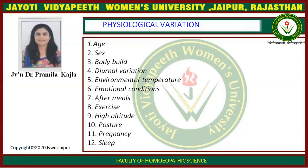Environmental temperature: cardiac output remains the same up to 30 degrees Celsius, but after 30 degrees cardiac output increases if temperature increases. In emotional conditions like anger, nervousness, and anxiety, cardiac output increases. At high altitude cardiac output increases. In lying down posture cardiac output is low compared to standing position. In pregnancy cardiac output increases because of high blood supply to the fetus. In sleep cardiac output is low.